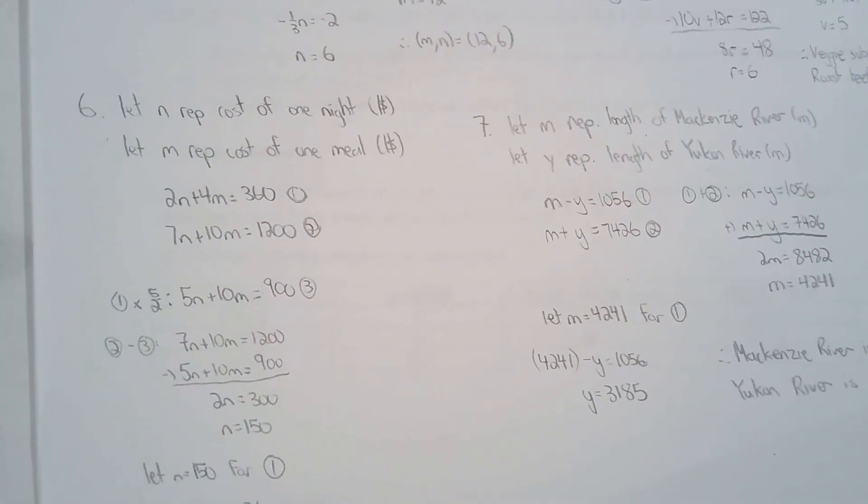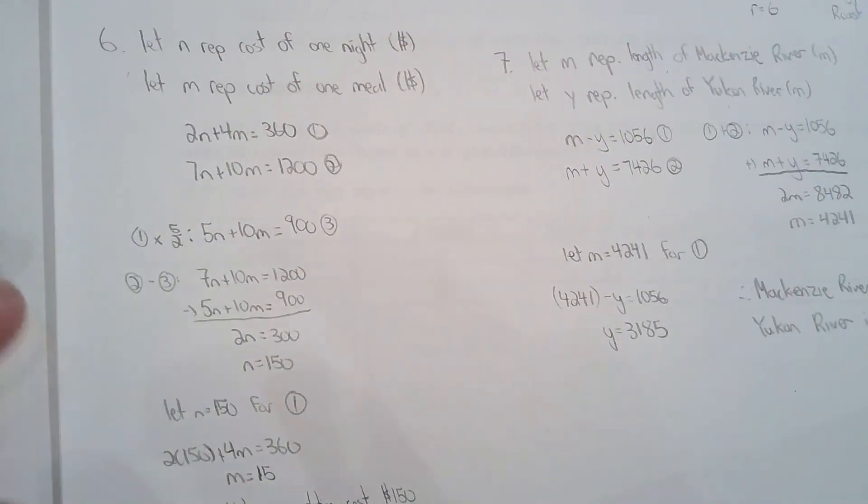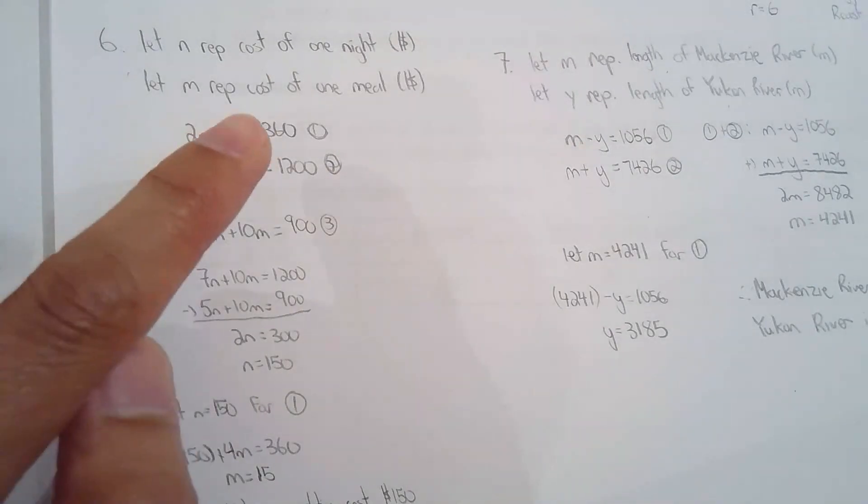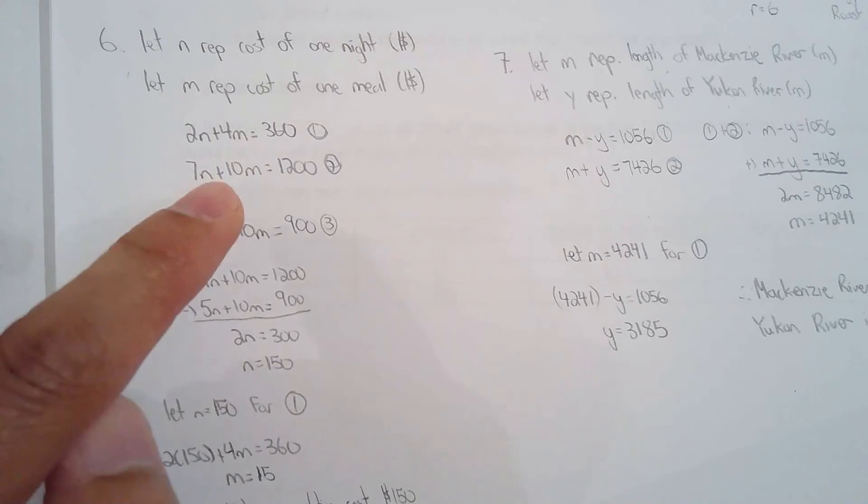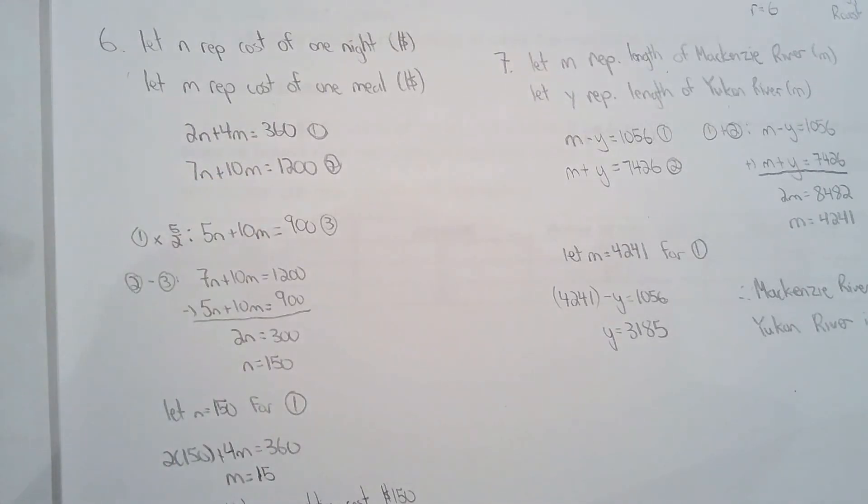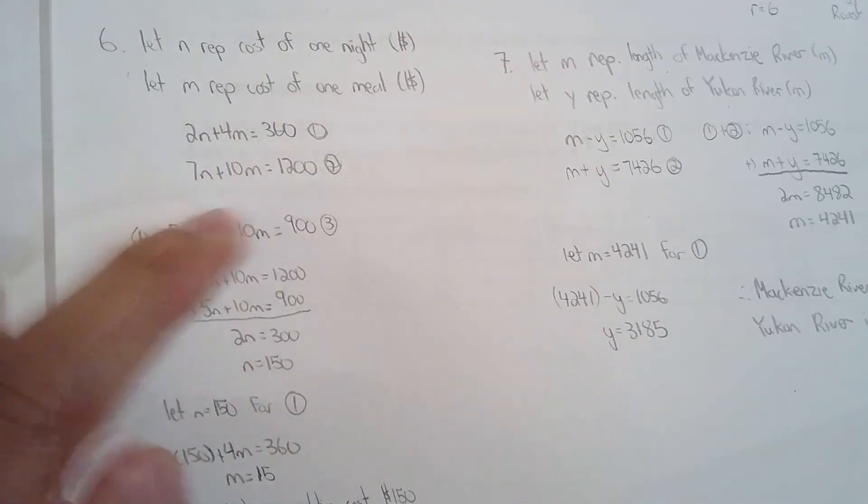So six, cost of one night and cost of one meal. So two nights and four meals is 360. Seven nights and 10 meals is 1,200. Wow, that's steep. Anyways, you can solve by elimination. Eliminate n or m, whatever you want.